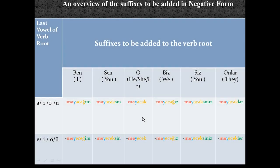Now let's see the table chart. This column shows the last vowel of the verb root, since depending on that vowel we add either 'ma' or 'me' — the two-way vowel harmony rule. For verb roots whose last vowel is 'a,' 'ı,' 'o,' or 'u,' the negative suffix is 'ma,' which requires the 'acak' future tense suffix. For 'ben,' the form is 'mayacağım' — you can see the buffer 'y' and the personal suffix 'ım.'